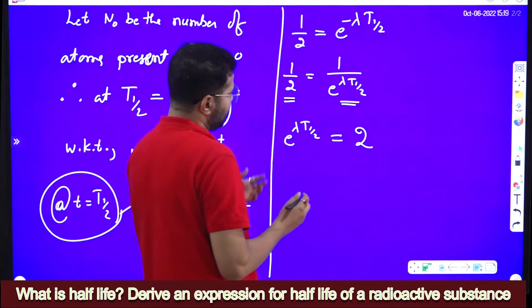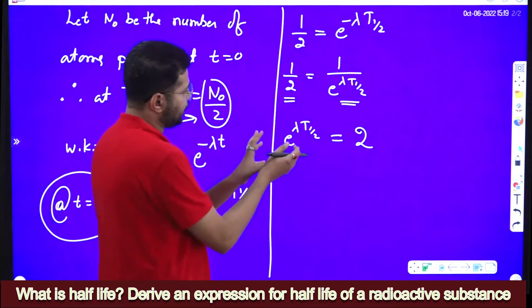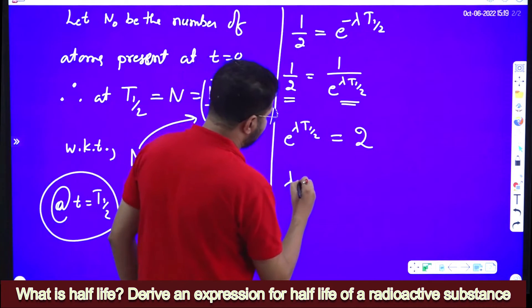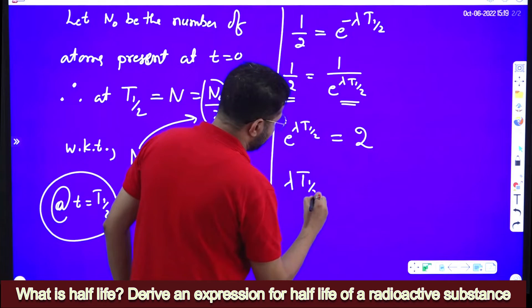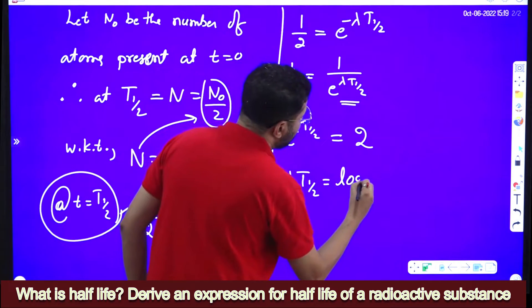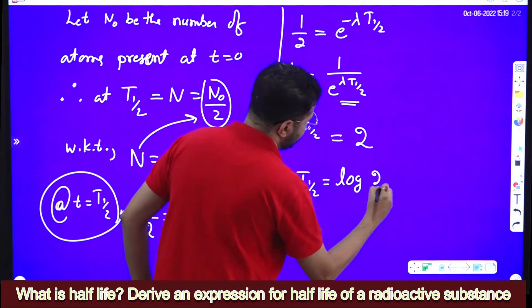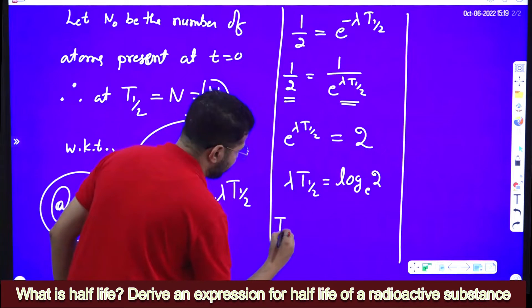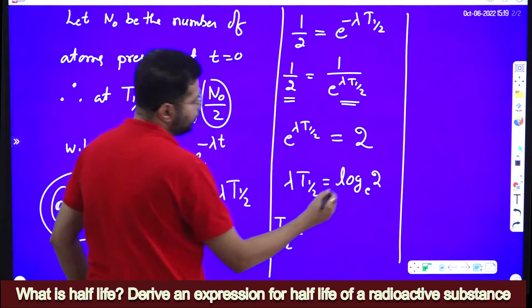Or we know that exponential and log are inverse functions. So when the exponential goes to RHS, it becomes log function: lambda into t half is equal to log 2. Or t half, half-life t half is equal to log 2.